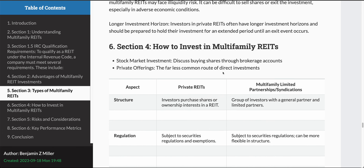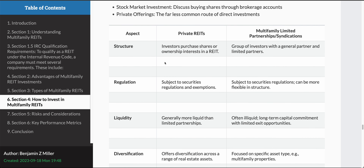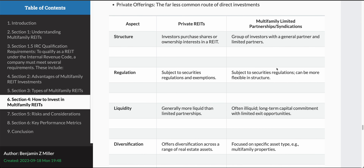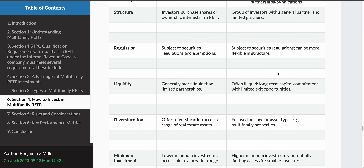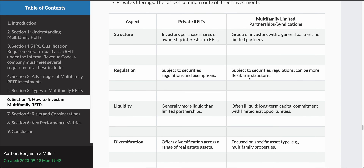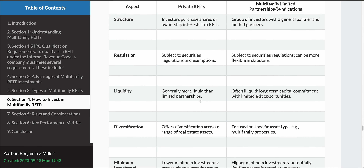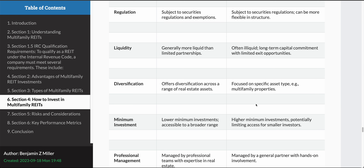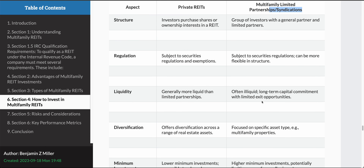Now let's do an interesting comparison: private REITs versus what many people think of as a much better alternative — multifamily limited partnerships and syndication. With a private REIT, investors purchase shares and sit back. With a multifamily syndication, there's a general partner and limited partners — the limited partners get preferred rates of return without having to do any work. Both private REITs and multifamily syndications are subject to regulation and both have low liquidity. Private REITs might be slightly more liquid, but you can simulate diversification by investing in more than one syndicate.